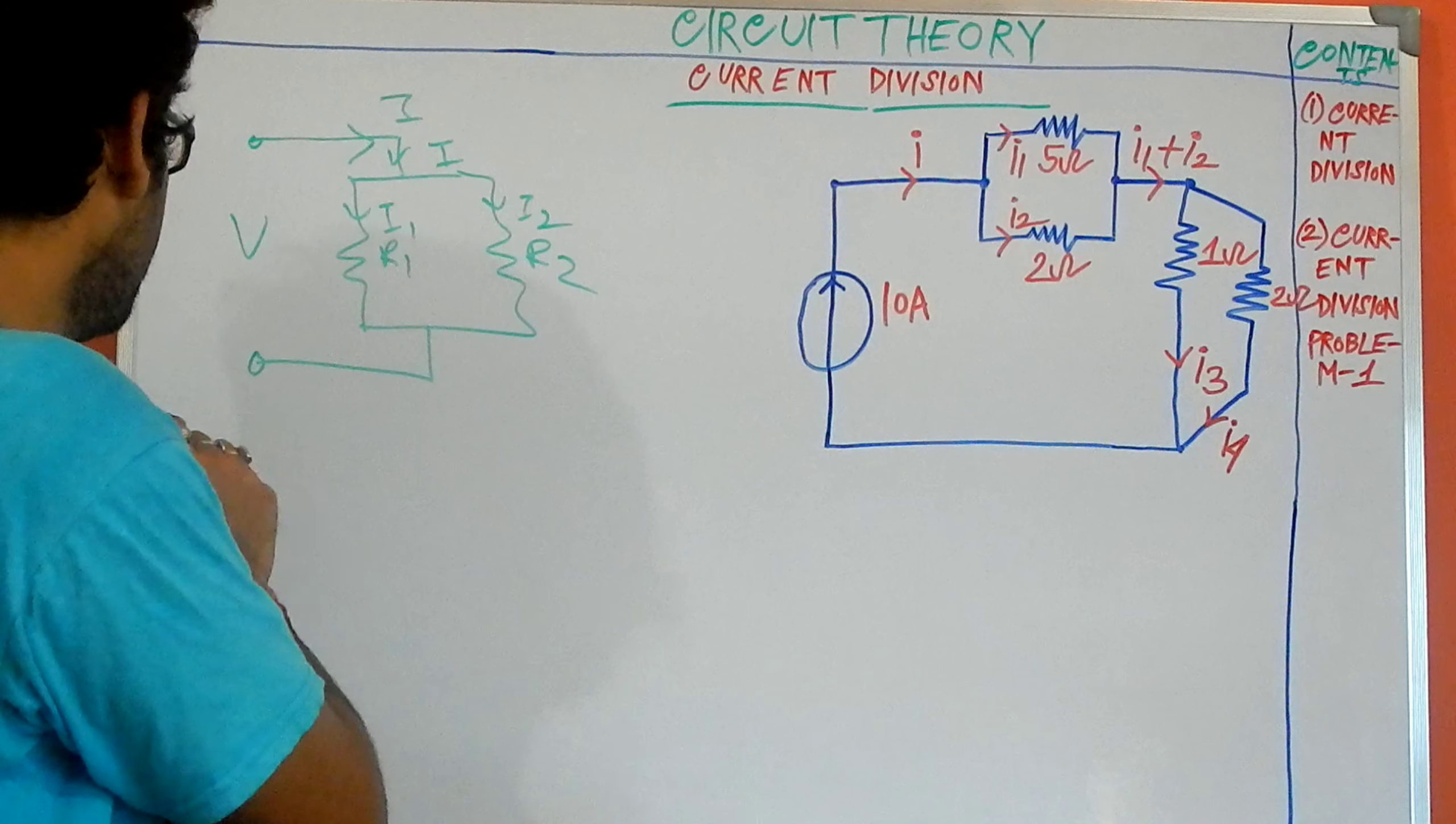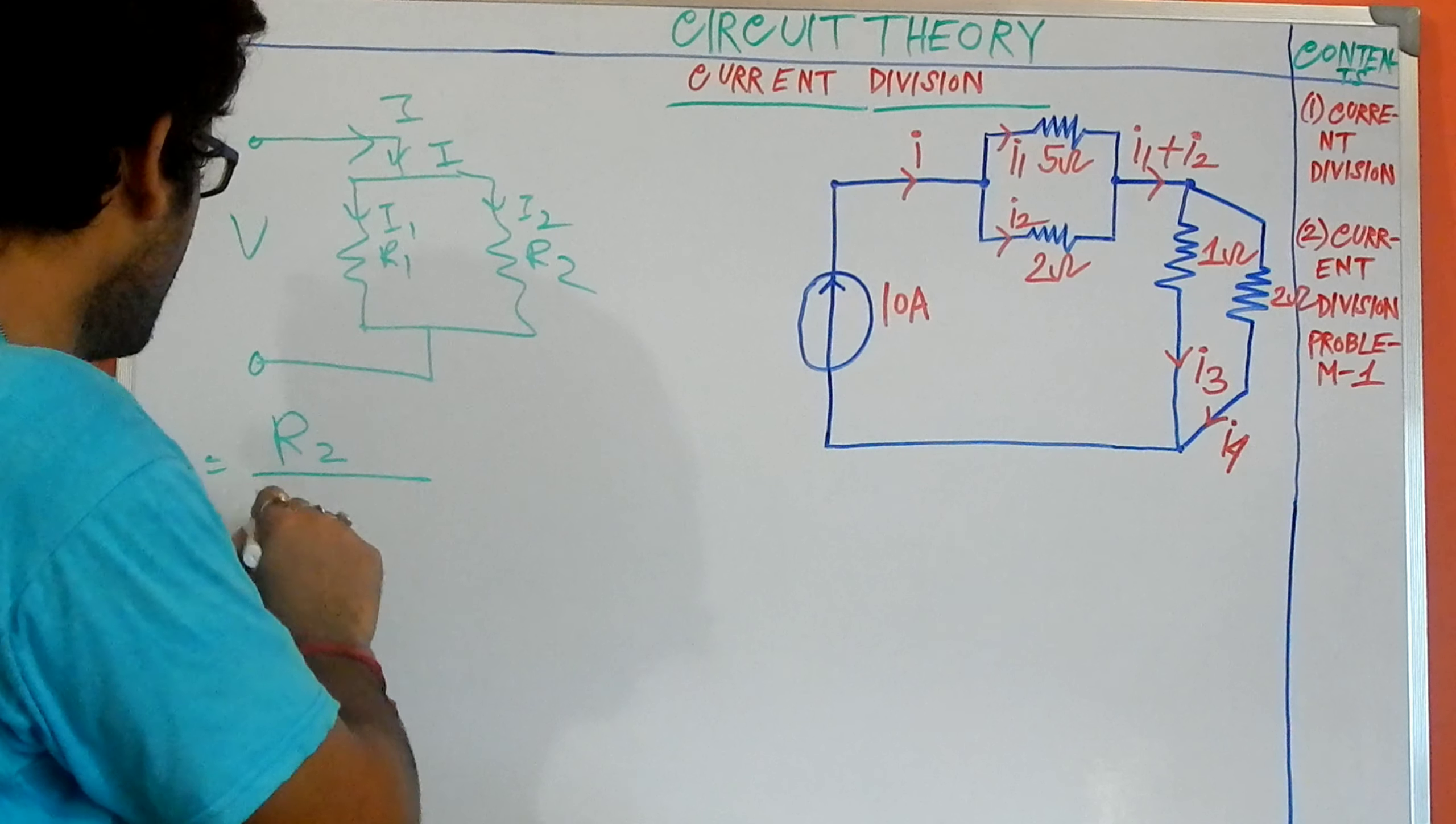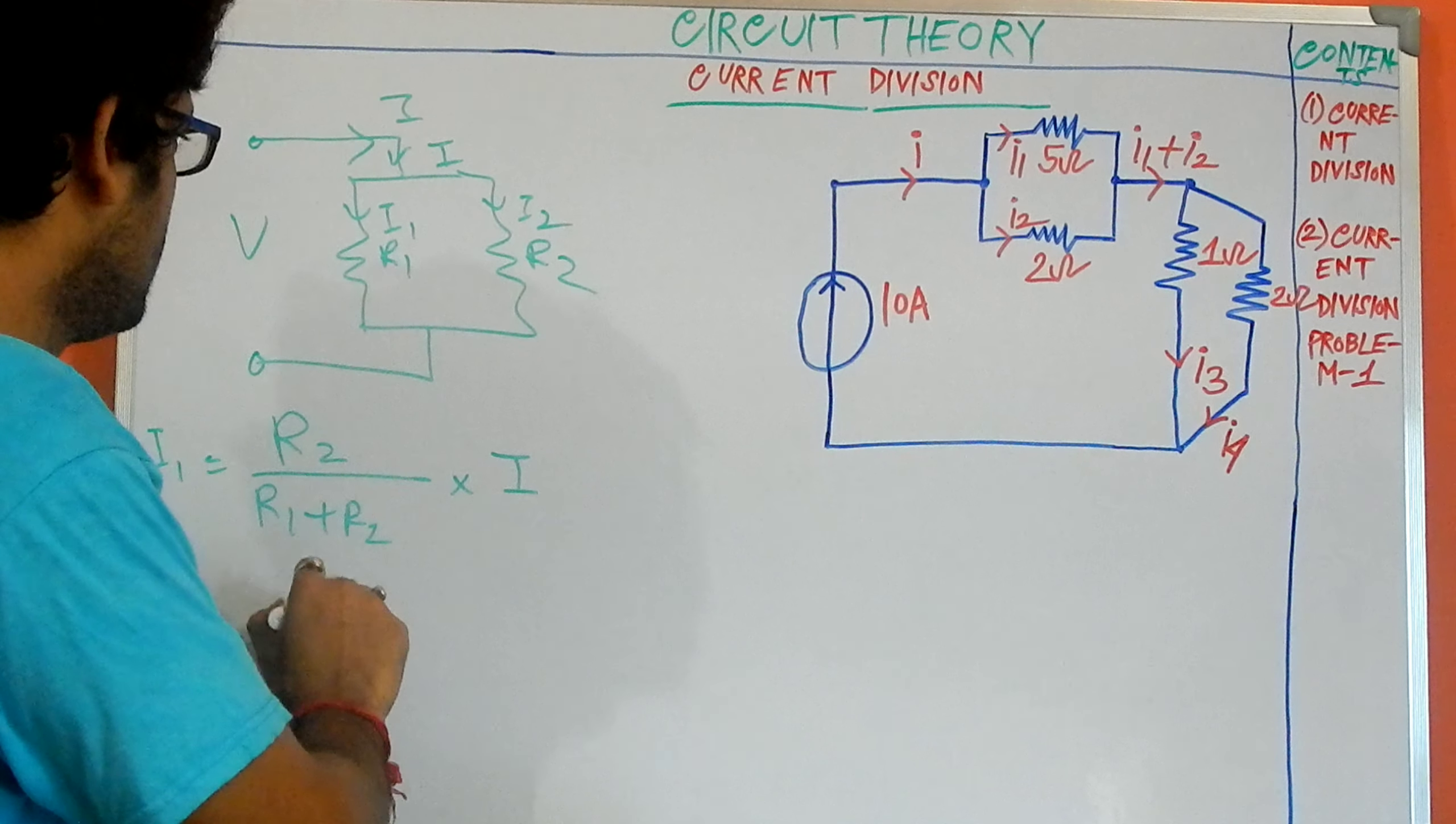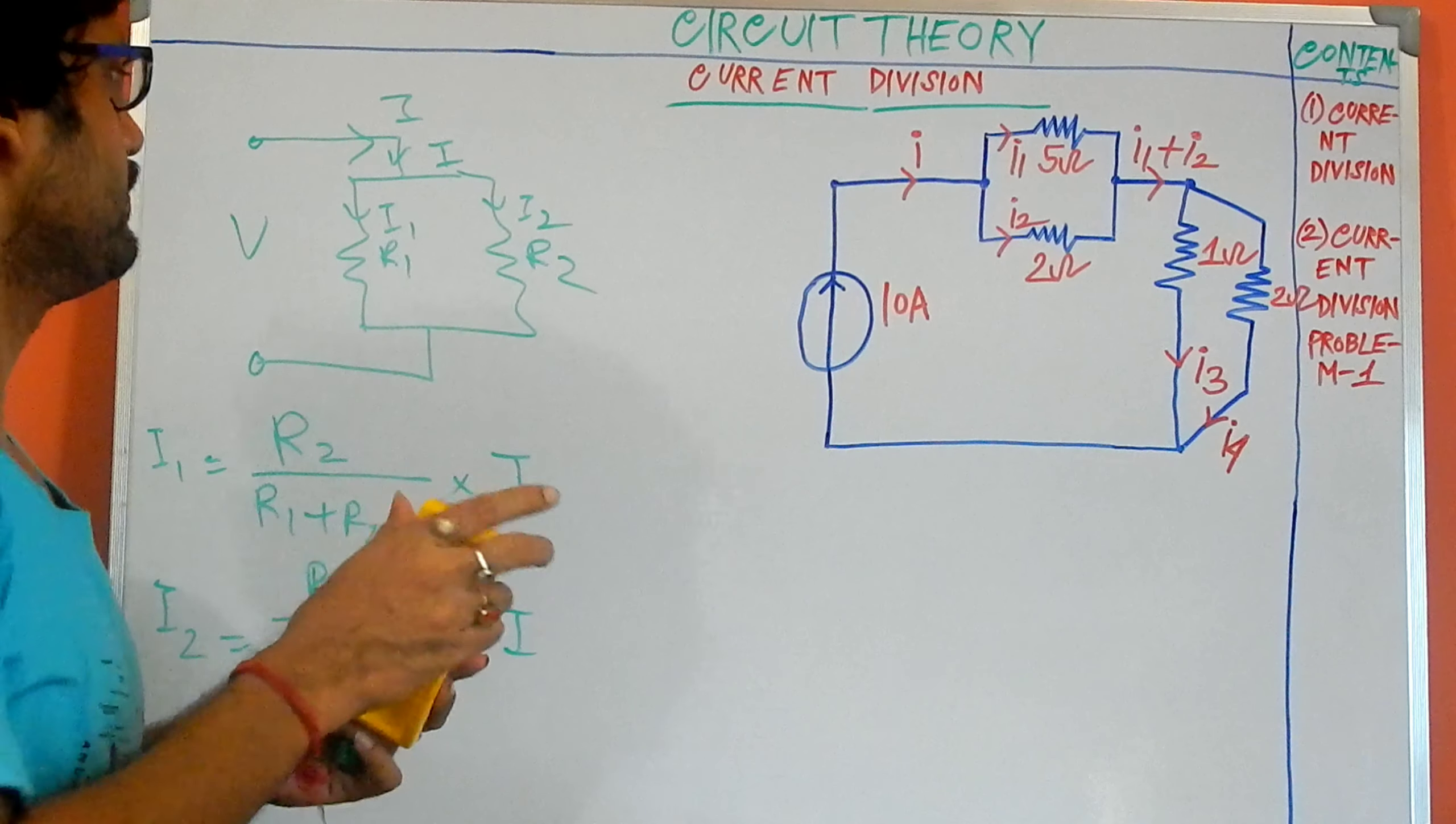So what is the expression for I1? I1 is R2 divided by R1 plus R2 multiplied by I, and I2 is R1 divided by R1 plus R2 multiplied with I. So this is our formula and this formula is needed to solve this problem.